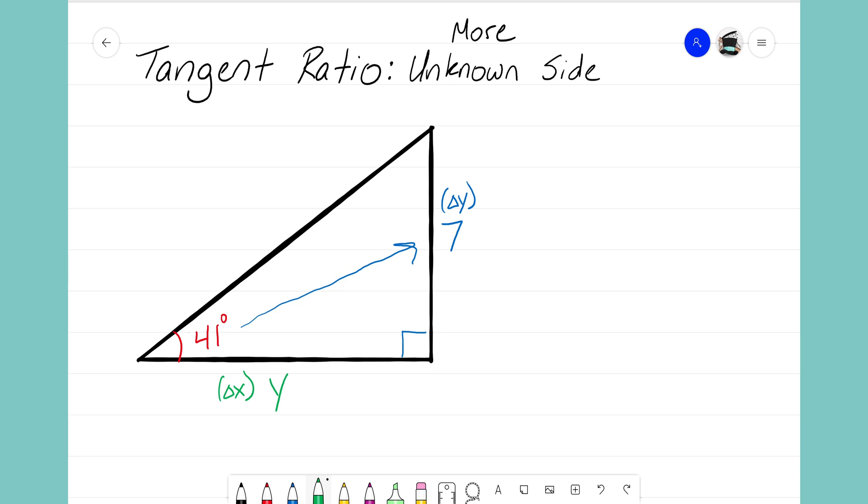So let's get going. We want to first write out tangent of our angle. Our slope angle here that we're using is 41 degrees, and then we're going to set that equal to the slope of the triangle. Remember, slope of the triangle: Delta Y over Delta X. In this case my Delta Y here is 7 over my Delta X, which in this case is my Y.